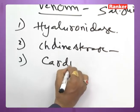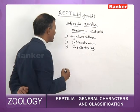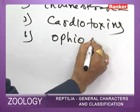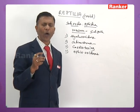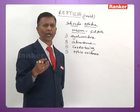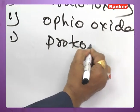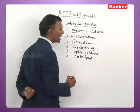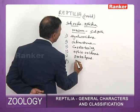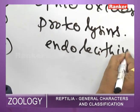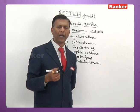Cardiotoxins affect the heart and are present in both neurotoxic and hemotoxic snakes. Ophioxidases enhance putrefaction of tissue and are present in both types. Proteolysins, preferably in hemotoxic snakes, destroy tissues. Endolecithinases damage and rupture blood vessels, causing profuse internal bleeding.